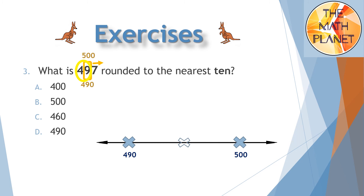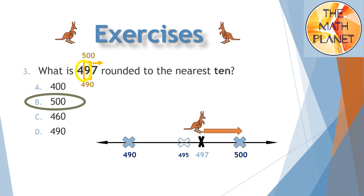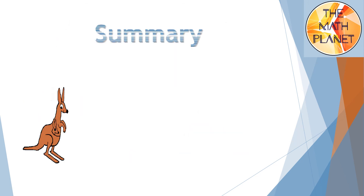On the number line I will put 490 as my lower benchmark and 500 as the upper benchmark. The halfway number is 495. I will locate 497 on the number line — 497 is closer to 500, so the correct answer is 500 and I will round up the number to 500.